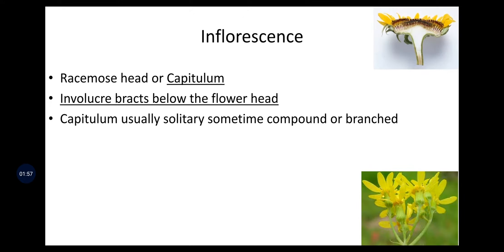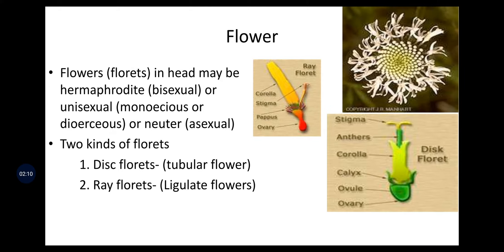Inflorescence is head or capitulum type. Involucral bracts are present below the flower heads. Capitulum is usually solitary, sometimes compound or branched. Flowers or florets in the head may be hermaphrodite, i.e., bisexual, or unisexual. Unisexual means monoecious or dioecious, or neuter like asexual. Two kinds of florets are observed: disc florets and ray florets. Disc florets are tubular flowers and ray florets are ligulate flowers.